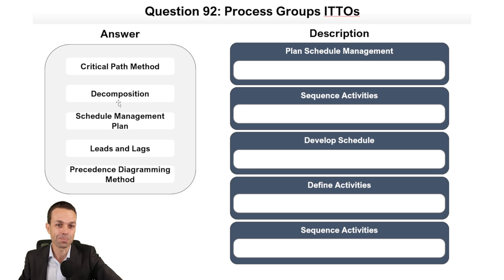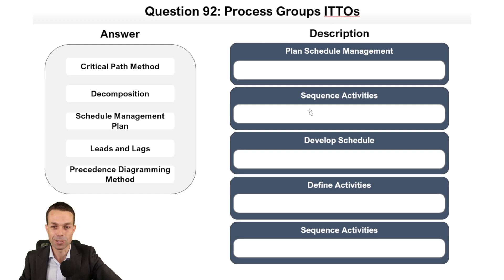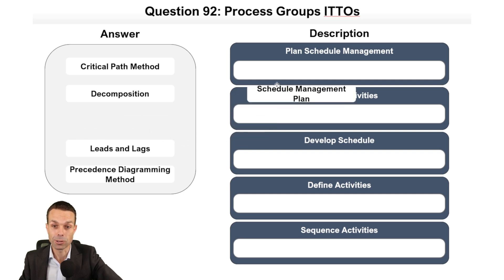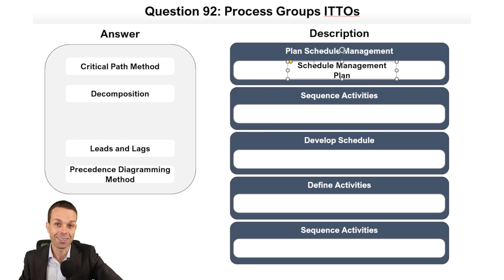Next question: planning schedule management — these are process group inputs, tools and techniques, and outputs. The first one is creating our schedule management plan, which defines how we're going to manage our schedule. Then we move to sequencing our activities.